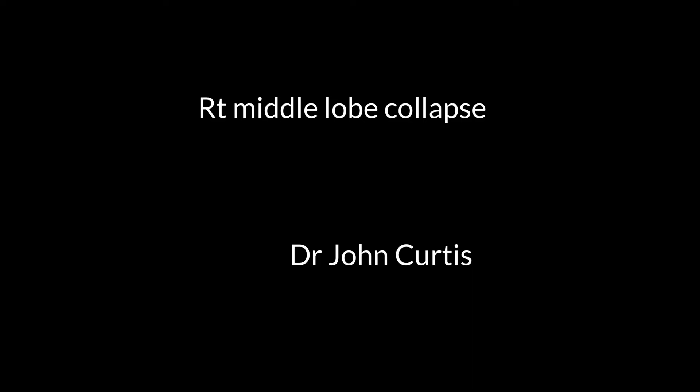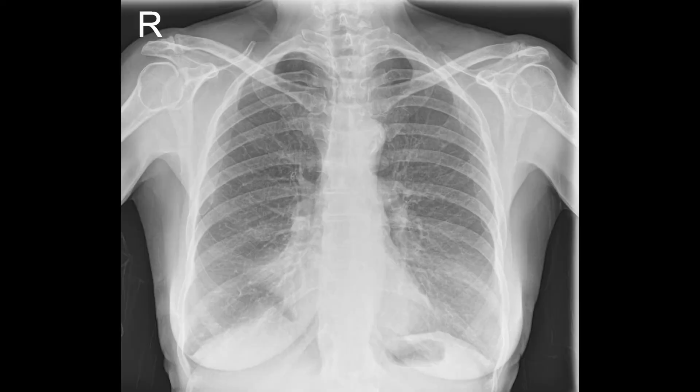This is a short video on middle lobe collapse. This chest x-ray demonstrates loss of the right heart border due to middle lobe pathology. It is quite difficult sometimes to differentiate between collapse and consolidation on the PA film, simply because the volume loss is not great.